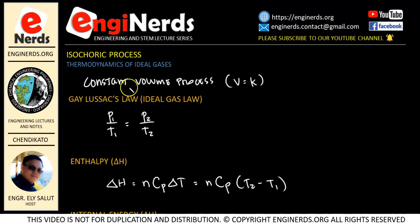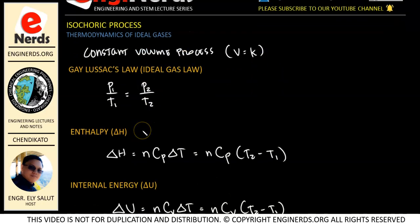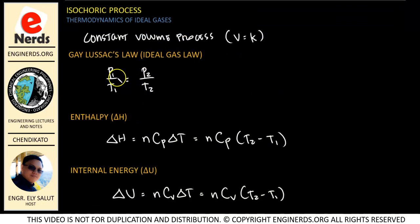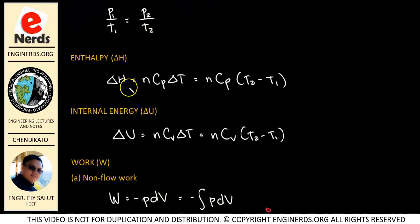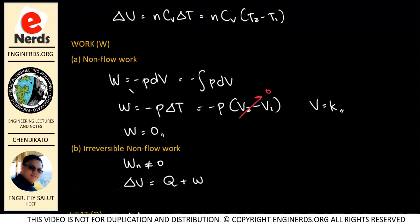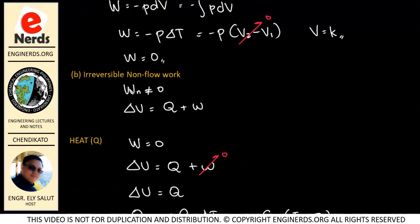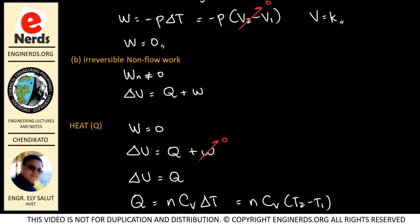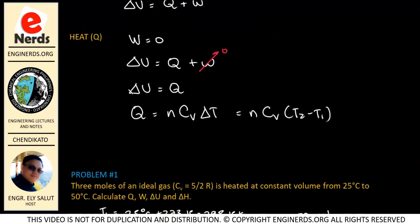Hi guys, today we're going to discuss the isochoric process in the thermodynamics of ideal gases. Isochoric basically means that we have a constant volume process. When we have an ideal gas behaving in a constant volume process, we are working with Gay-Lussac's law. We will be discussing the equations that we will be using in solving for processes of ideal gases in thermodynamics under constant volume process.